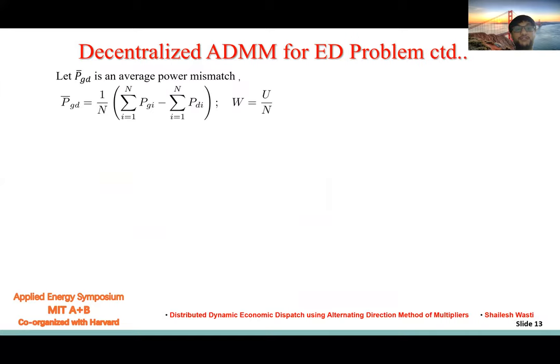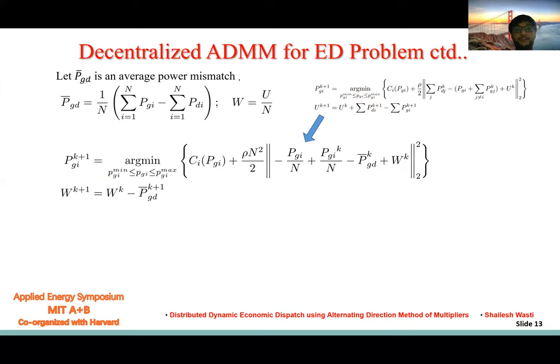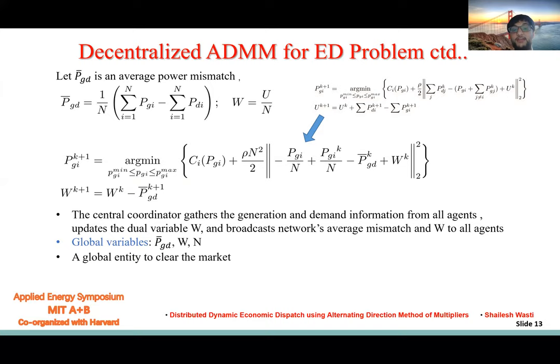Here we see each agent needs demand and generation of all agents, that is two modes of communication. So we introduce a new variable called average power mismatch, and do some algebraic calculation. Now this problem modifies to this problem, and here we have the average mismatch of power of the entire network.